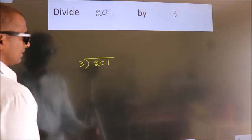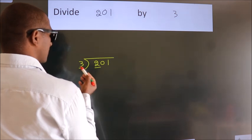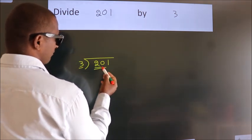Next. Here we have 2. Here 3. 2 smaller than 3. So we should take 2 numbers. 20.